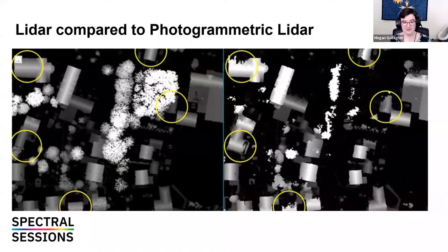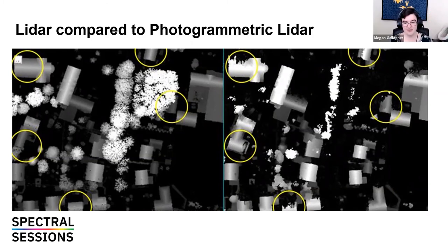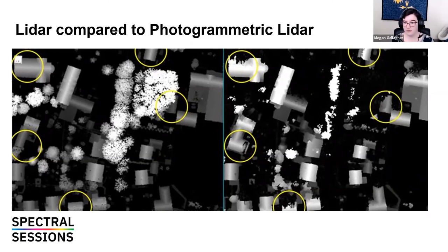If you look at the circles comparing the two, you can see some differences — some rooftops that are not correctly placed, the tree is still a major problem. When working with LiDAR in comparison to optical, you need to be aware of what you're trying to collect, when you're collecting it, and whether it's actually comparable and useful.